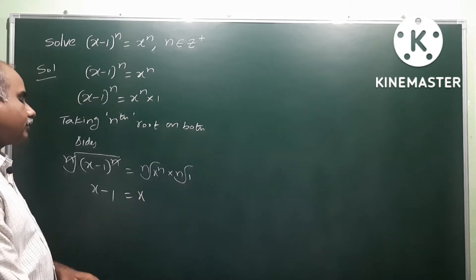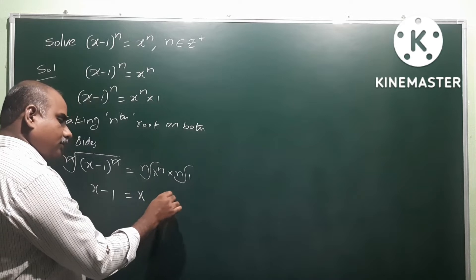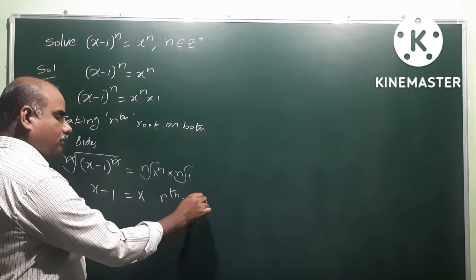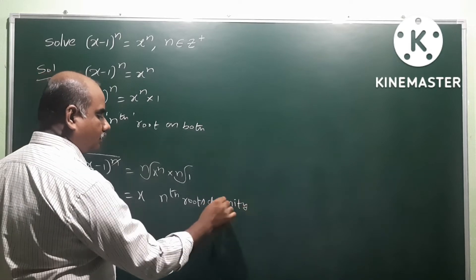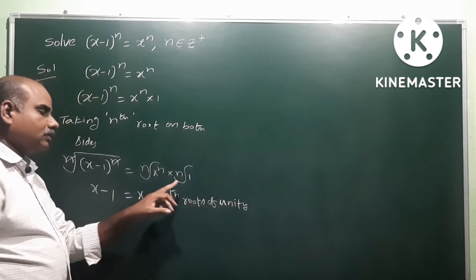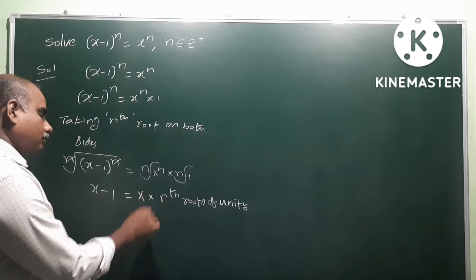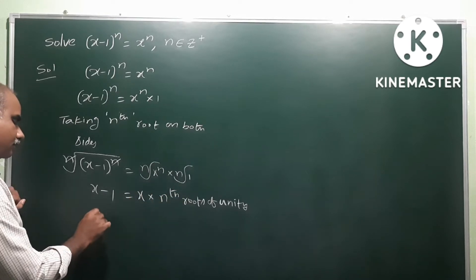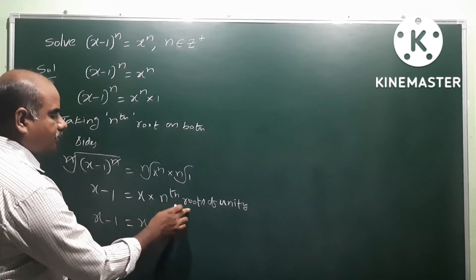So nth root of 1 means these are called nth roots of unity. Therefore, x-1 equals x times nth root of unity.